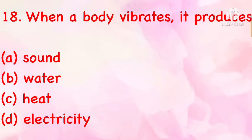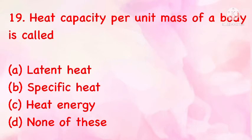When a body vibrates, it produces: (a) sound, (b) water, (c) heat, (d) electricity. The correct answer is (a): sound. Heat capacity per unit mass of a body is called: (a) latent heat, (b) specific heat, (c) heat energy, (d) none of the above. The correct answer is (b): specific heat.